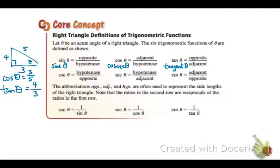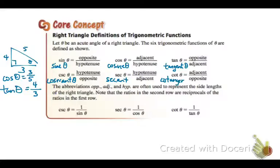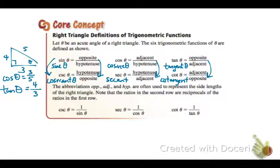Now cosecant, secant, and cotangent — the abbreviations are CSC, SEC, and COT. These are simply the reciprocals of sine, cosine, and tangent. So all you have to do is flip. Rather than opposite over hypotenuse, cosecant is hypotenuse over opposite. I remember them in pairs: sine and cosecant, cosine and secant, tangent and cotangent.